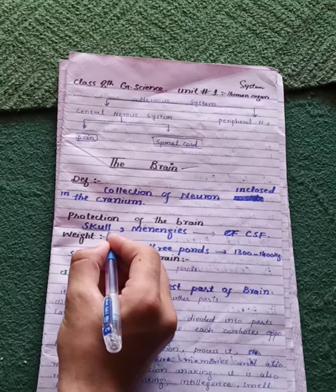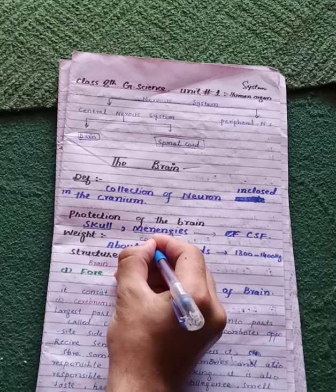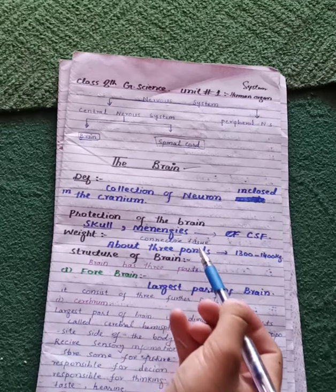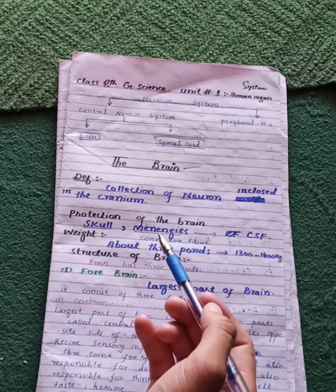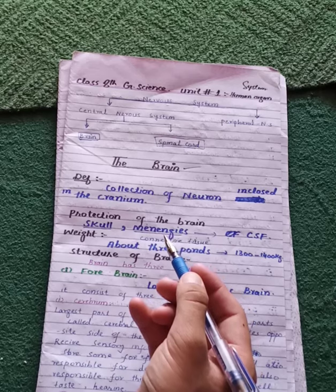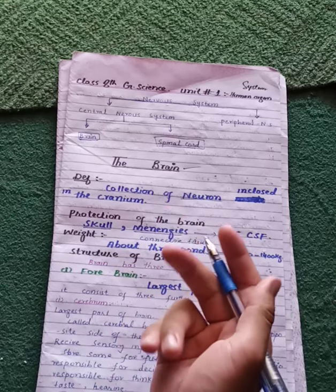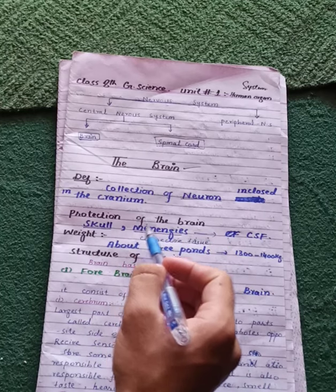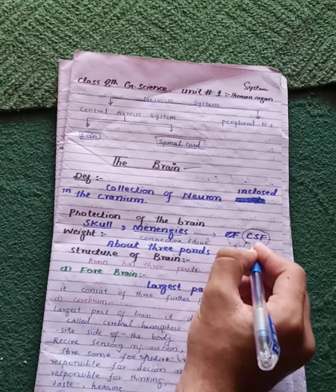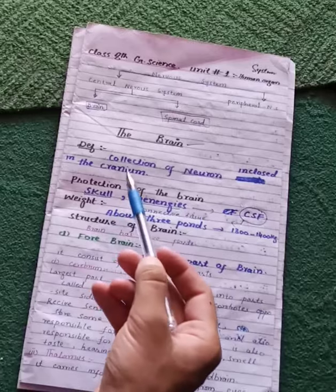The brain is protected by the skull, also called the cranium. Below the skull are the meninges — connective tissues with three layers — that provide further protection. Just as clothing protects the human body from the external environment, the meninges protect the brain. There is also a space between these layers.